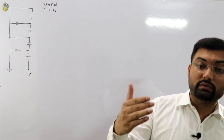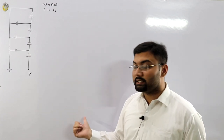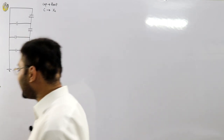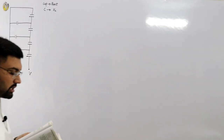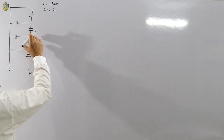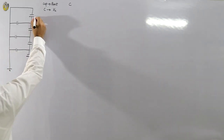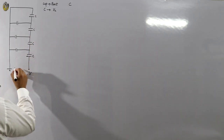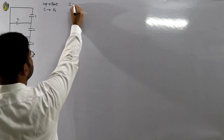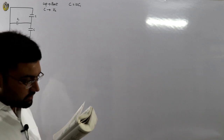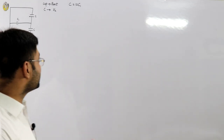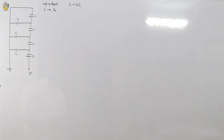When the number of discs exceeds three, this method is preferred, though it is equally applicable to two and three discs. Example 8.6 states: a string of four insulators has a self-capacitance equal to ten times the pin-to-earth capacitance. The self-capacitance is C and the shunt (pin-to-earth) capacitance is C1. We need to find the voltage distribution across the string as a percentage of total voltage, and then the string efficiency.